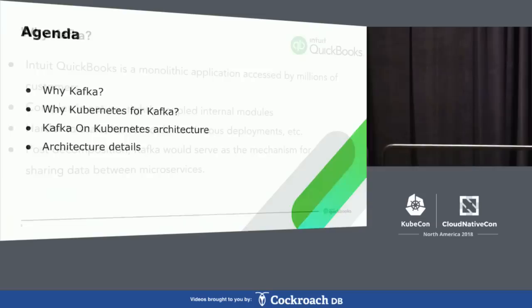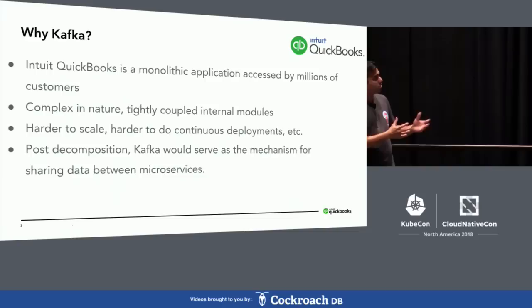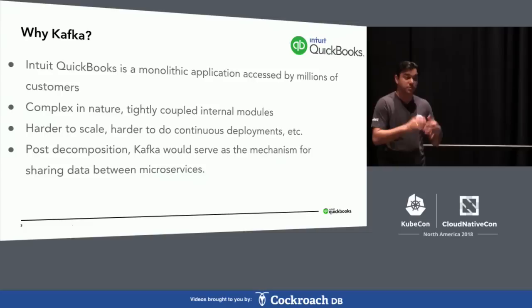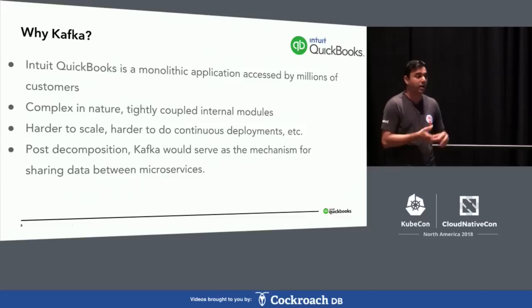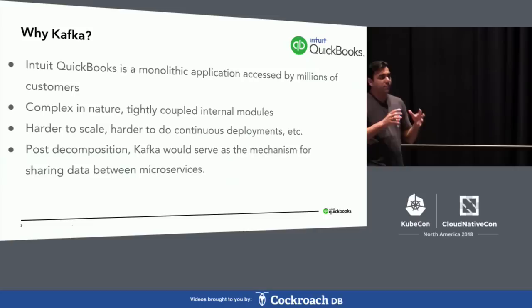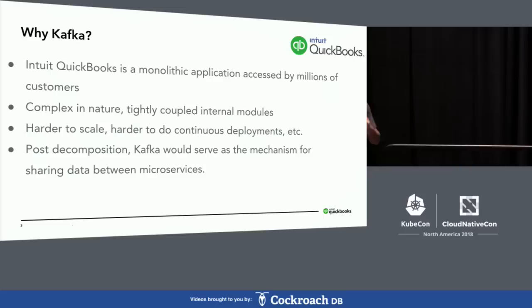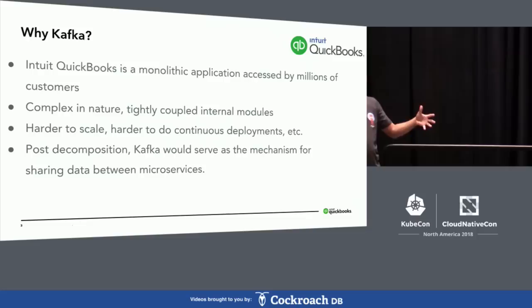Why Kafka? Within Intuit, I work for a team called QuickBooks. Intuit QuickBooks is a monolithic application used by millions of small business customers for accounting, payroll, and other financial management. It's a fairly complex application that's been around for several years, grown organically, and has tightly coupled modules. It has become harder to scale and harder to do continuous deployments. The goal was to take this giant monolithic application and break it up into multiple microservices.